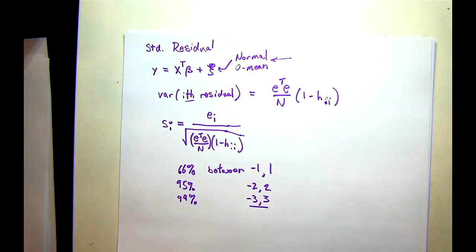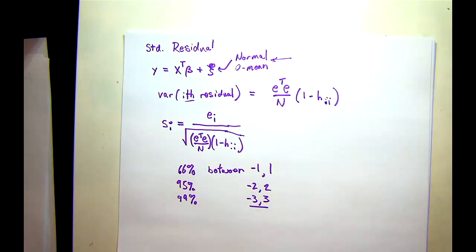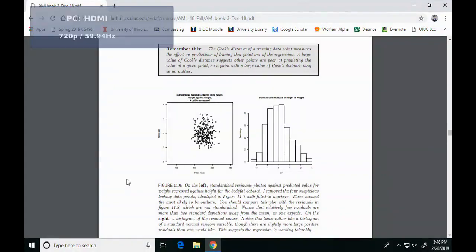So we've got three things: the leverage, the Cook's distance, and the standardized residual. Now we can look at a given problem where we actually look at how these things interact and identify outliers with them. In R, there is a really nice utility called GLMNet — a regression package that calculates the standardized residual, Cook's distance, and leverage, and allows you to look for outliers. You just run it, and it will give you a graph showing how all the data points fall out.